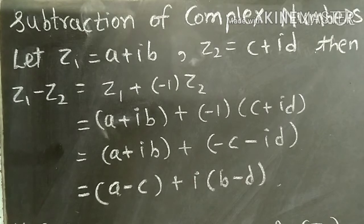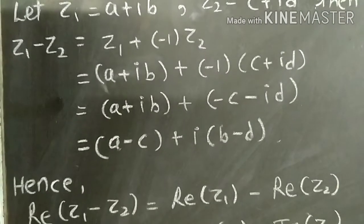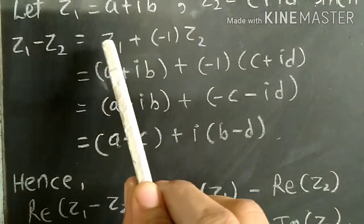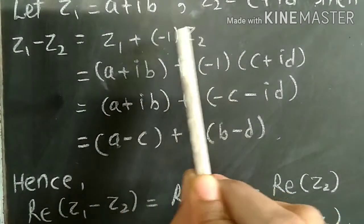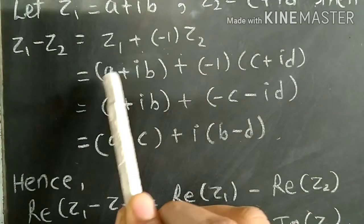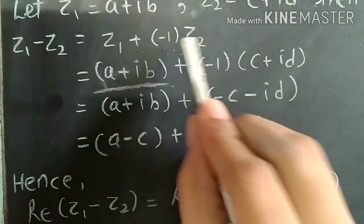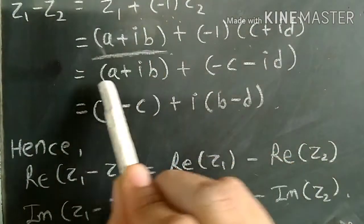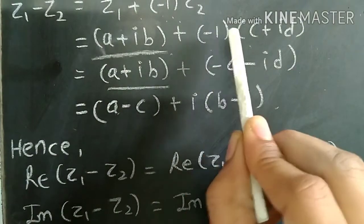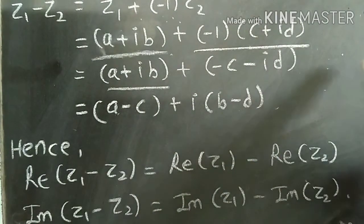Let Z1 equal A plus IB and Z2 equal C plus ID. Then Z1 minus Z2 is Z1 plus minus 1 times Z2, which is minus Z2. So Z1 minus Z2 equals A plus IB plus minus 1 times C plus ID.